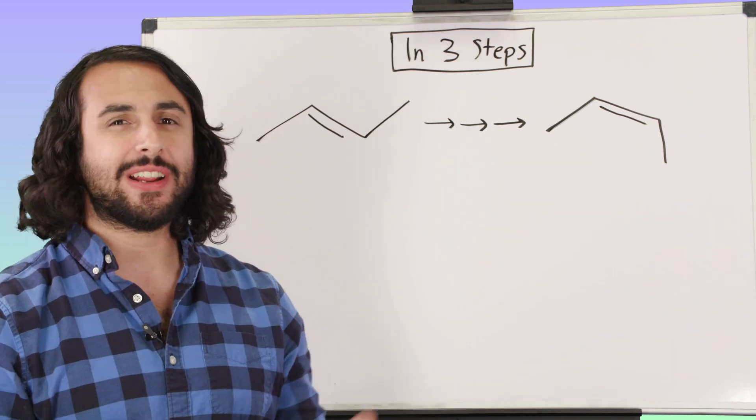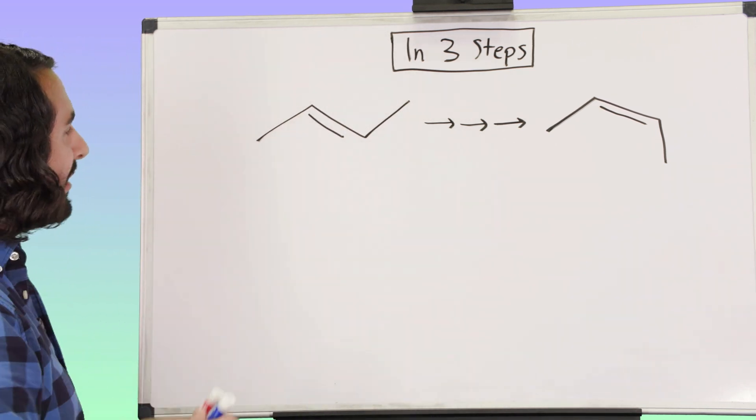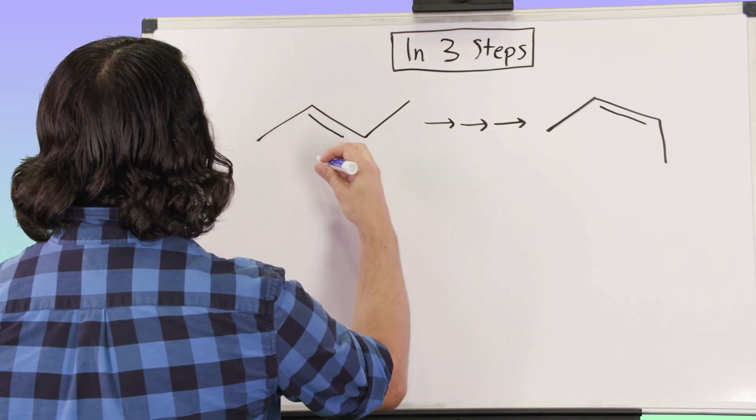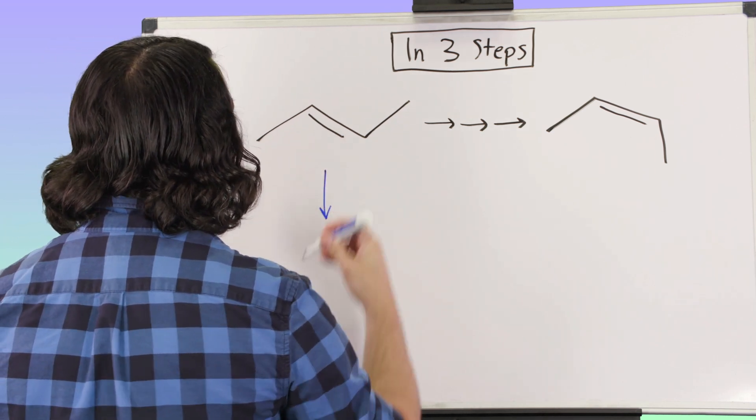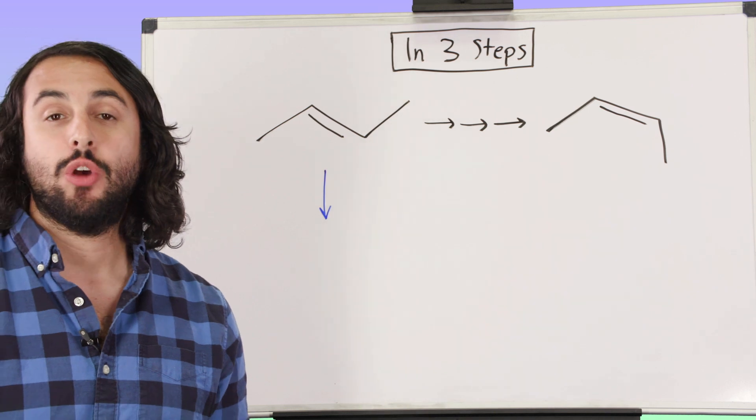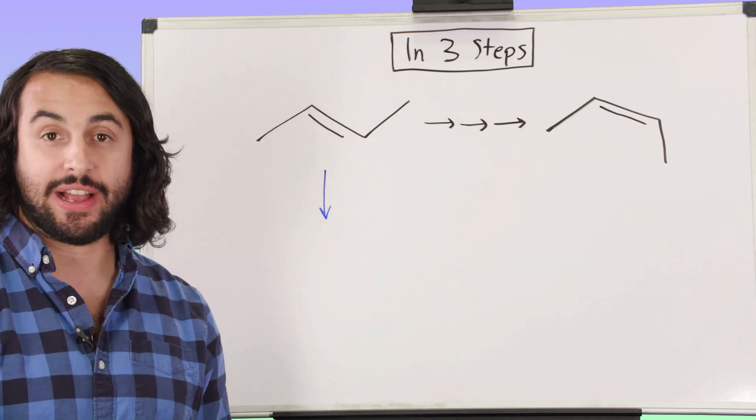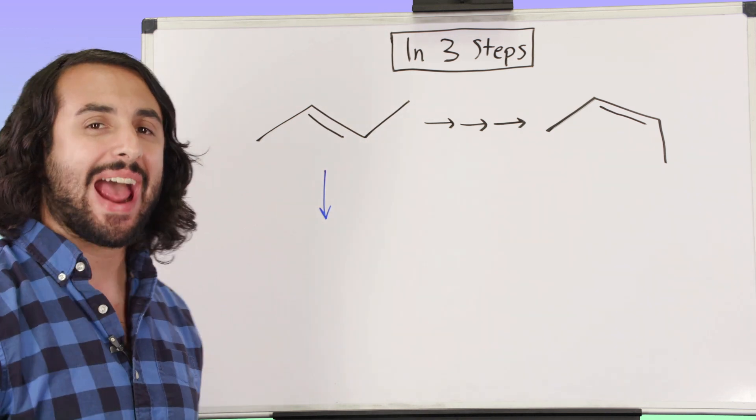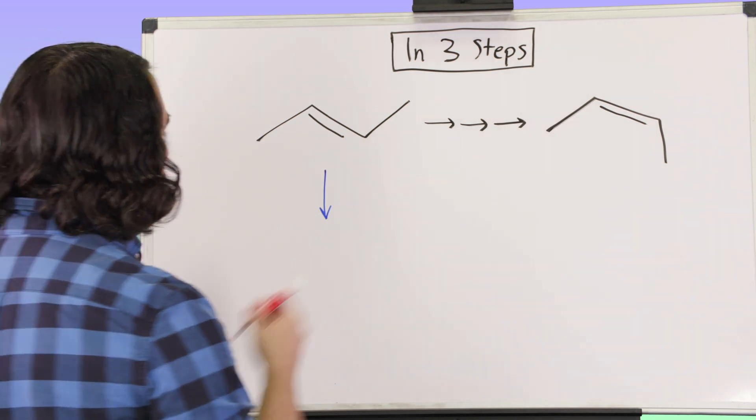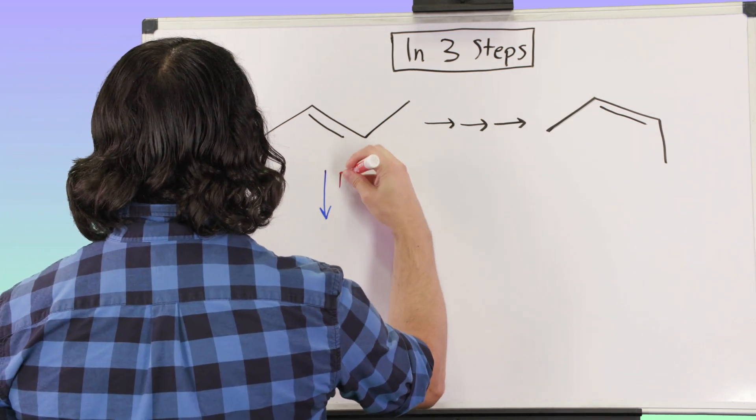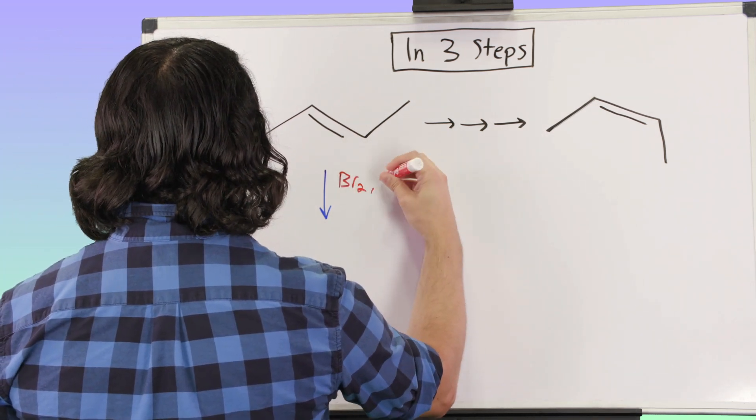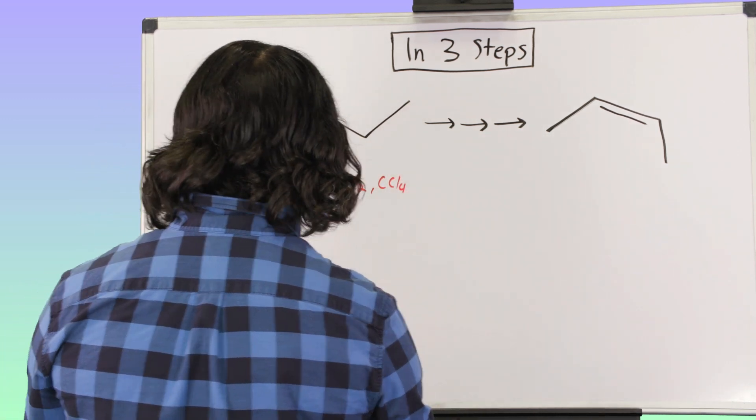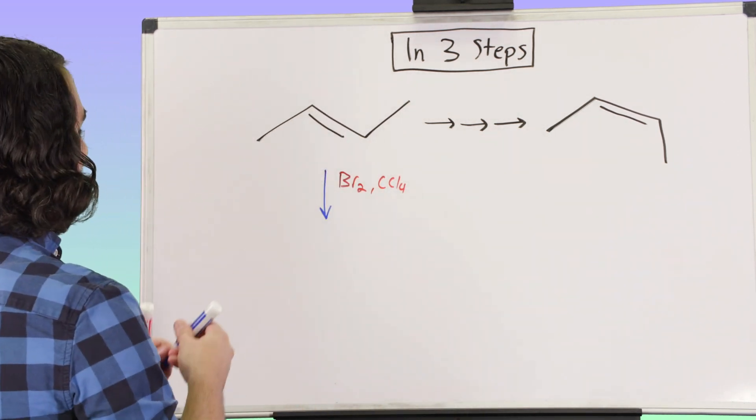So we're starting to piece things together. What am I going to do to set myself up for a situation where I can get an alkyne? What if we do a dihalogenation? Let's use bromine, and we would probably use CCl4. What's going to happen there?